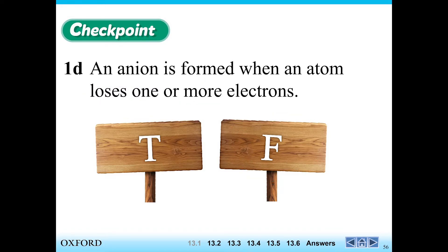Question D. An anion is formed when an atom loses one or more electrons. Now, let's recall. What's an anion? Anions, they make you cry.